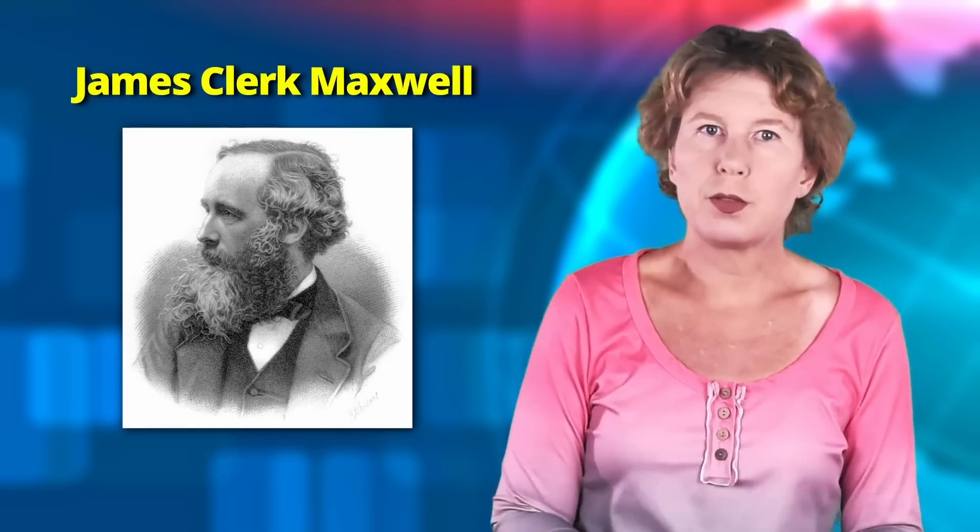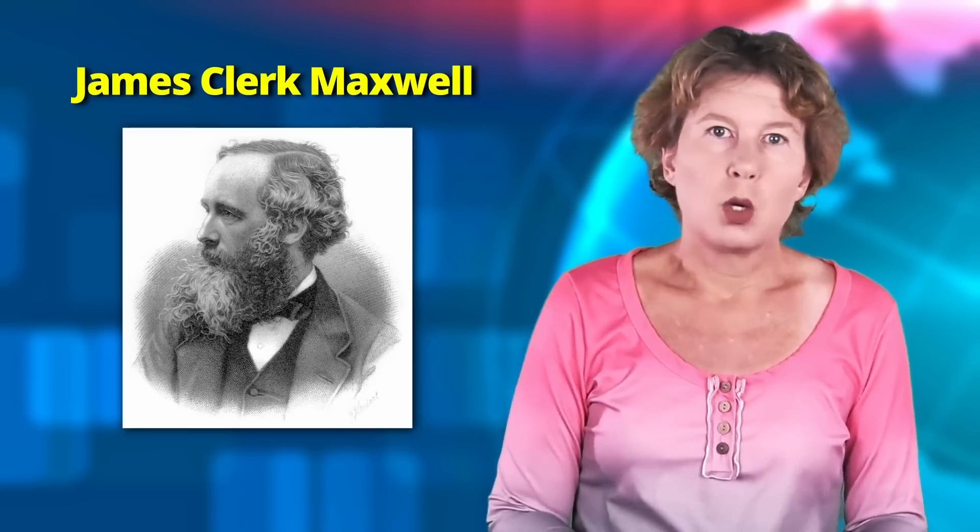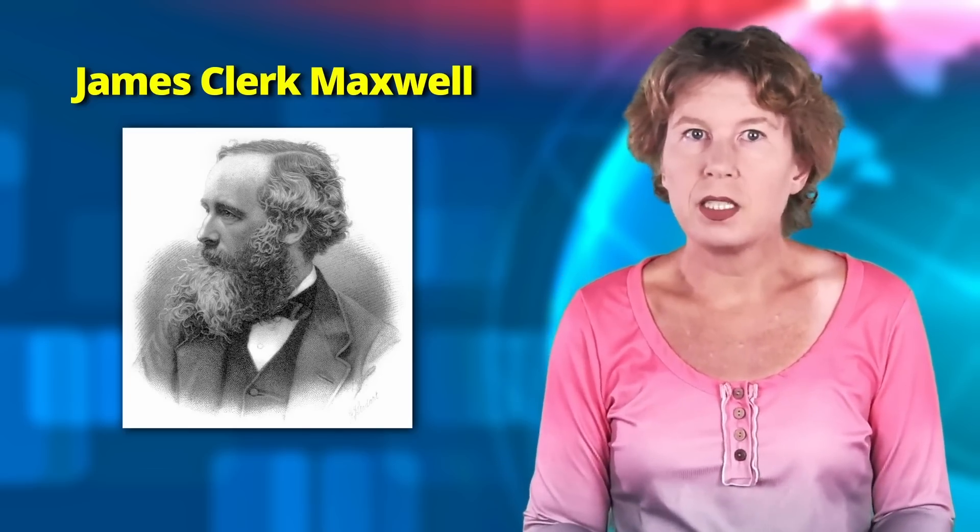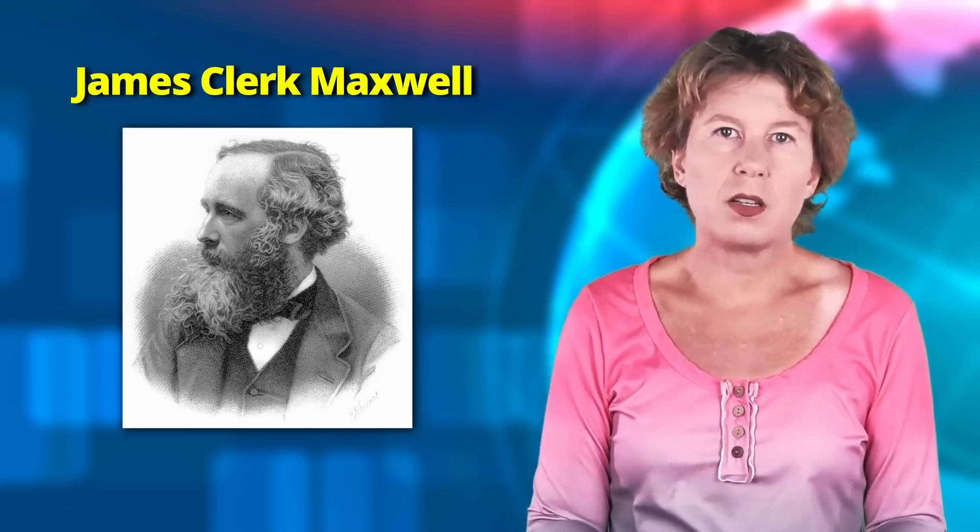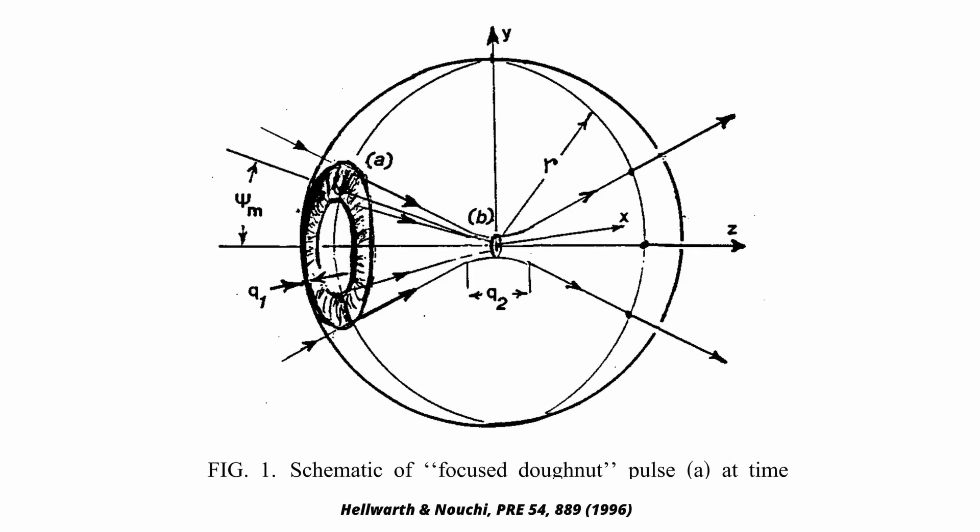Maxwell found the equations of electromagnetism 150 years ago, but they still hold some surprises. One of the biggest surprises for me was that only 30 years ago, physicists found a new type of solution that describes a freely propagating vortex ring, which they called a focus donut.